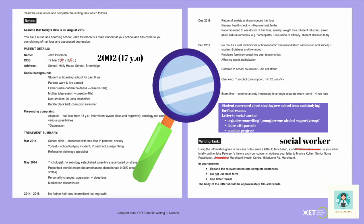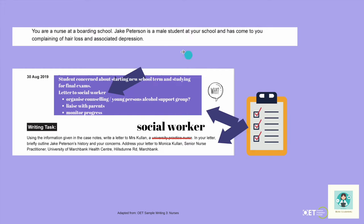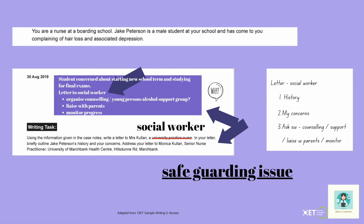Let's break this down in more detail. You are the nurse at the boarding school. Jake Peterson is a male student who has come to see you complaining of hair loss and depression associated with that. The student is concerned about starting a new school term. You have to write a letter to the social worker to organise counselling, liaise, and monitor. You've been asked to briefly outline his history and express your concerns — so in effect there are three things: outline his history, express your concerns, and make these requests.